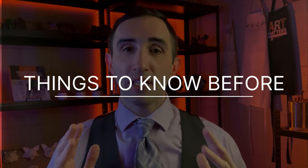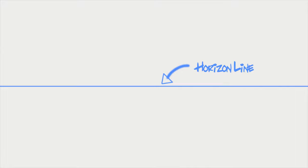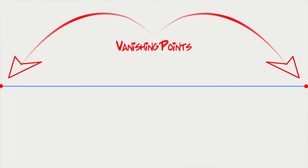Before we get started, let's review some key essential terms. First, everything in a two-point perspective drawing starts by establishing your horizon line, which simply means this is where you're looking — the eye level in a perspective drawing. At either end of your horizon line are your vanishing points, where all of your lines converge in a two-point perspective drawing.